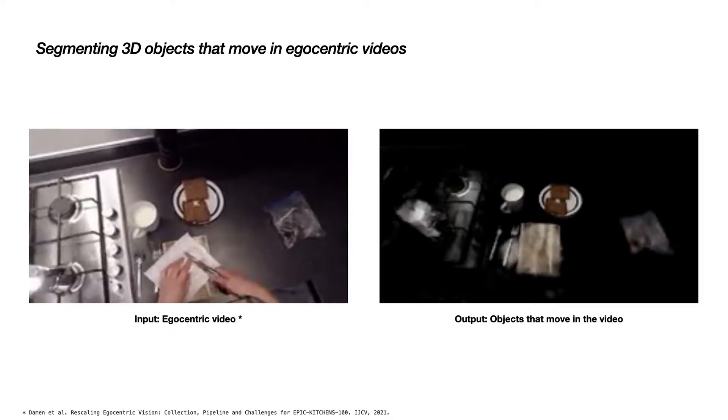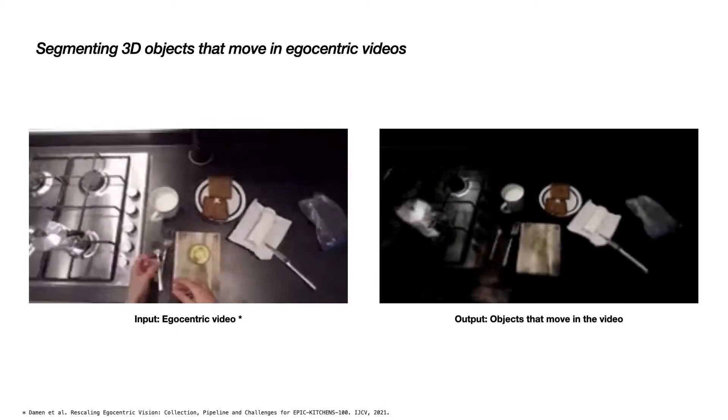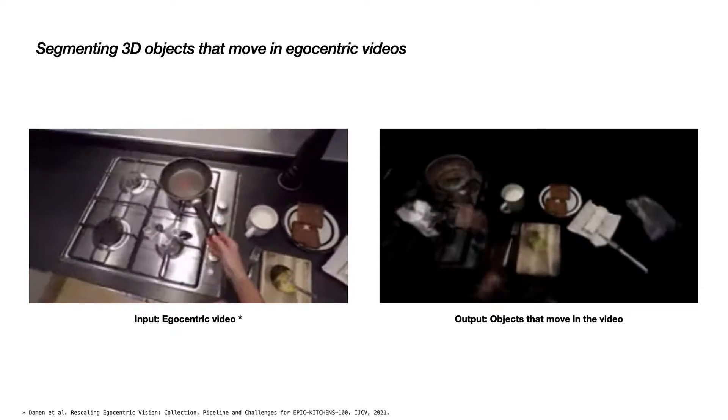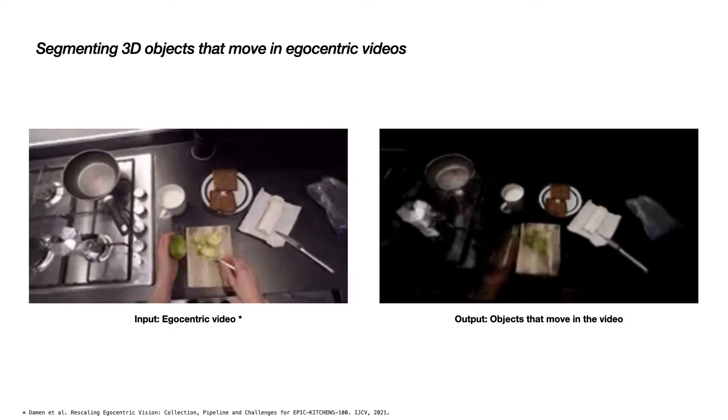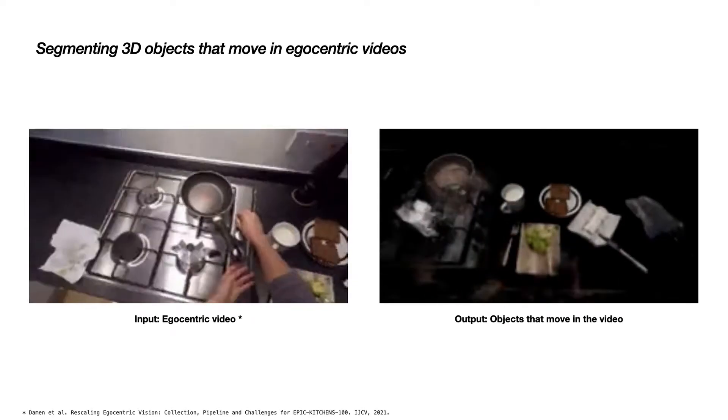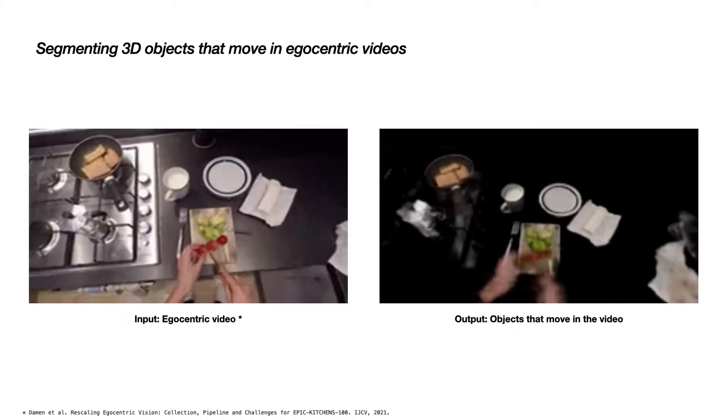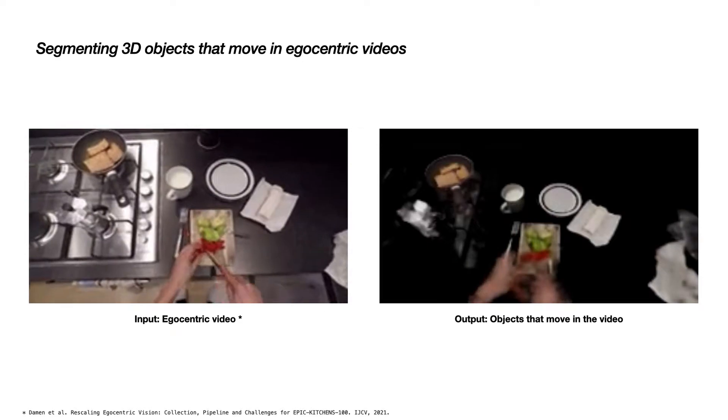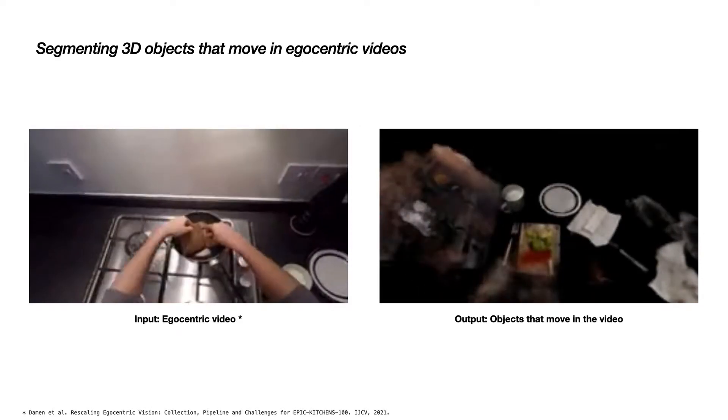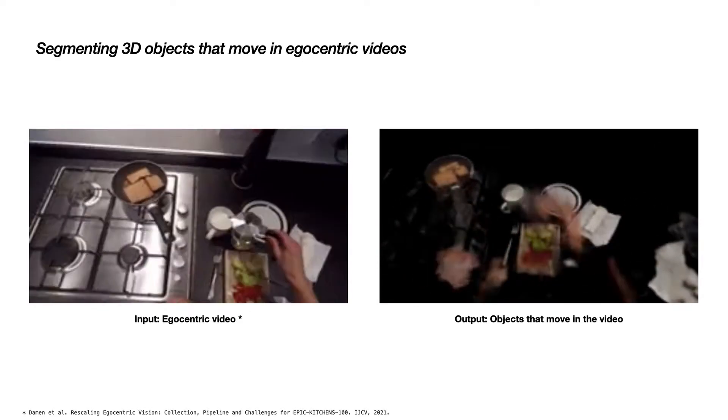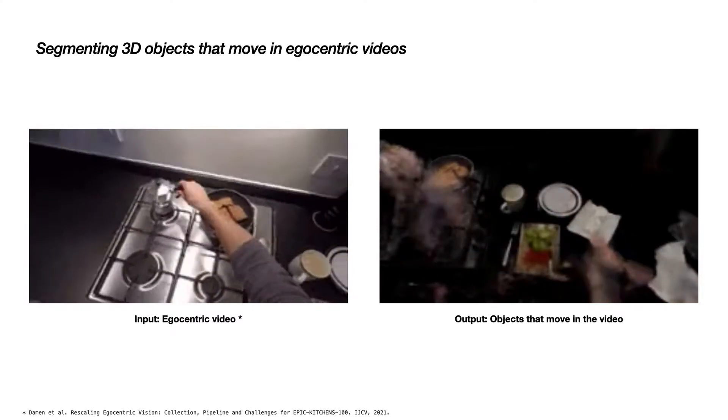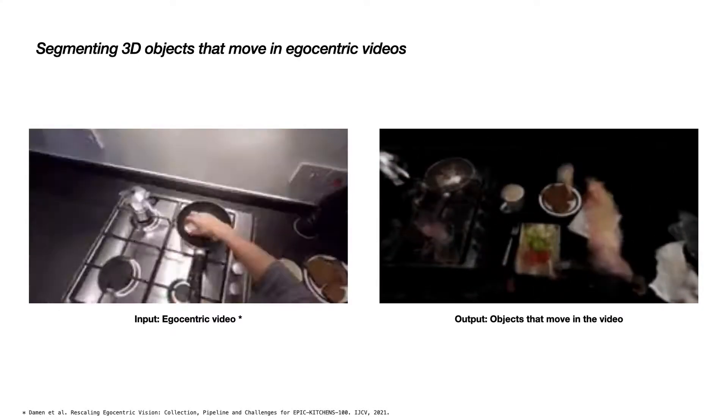An example output can be seen on the right. We use neural rendering for learning a separable 3D representation of the scene. Then we remove the background, fix the viewpoint, and visualize all objects that have been moved during the video. This kind of representation enables us to reason about the objects in a way that is consistent with geometry.